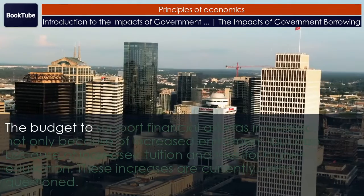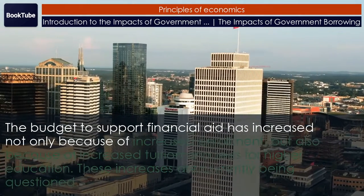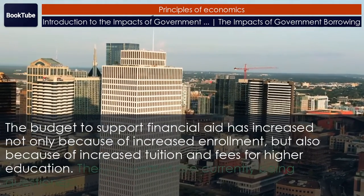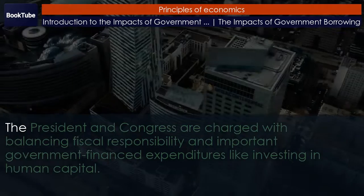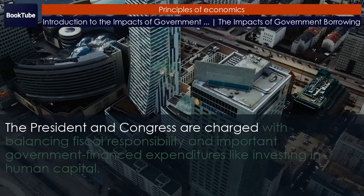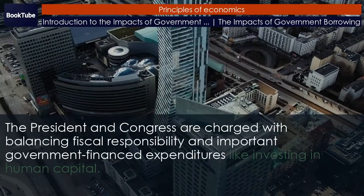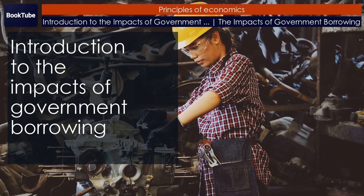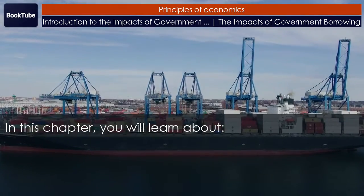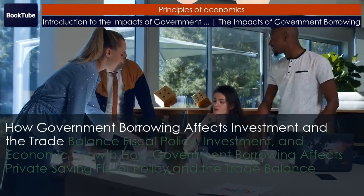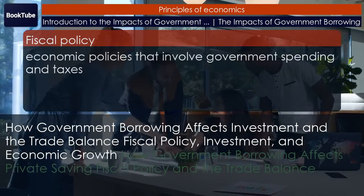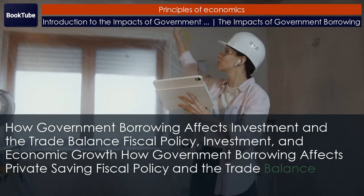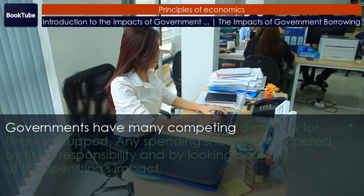The budget to support financial aid has increased not only because of increased enrollment, but also because of increased tuition and fees for higher education. These increases are currently being questioned. The President and Congress are charged with balancing fiscal responsibility and important government-financed expenditures like investing in human capital. In this chapter, you will learn about how government borrowing affects investment and the trade balance, fiscal policy, investment and economic growth, how government borrowing affects private saving, and fiscal policy and the trade balance.